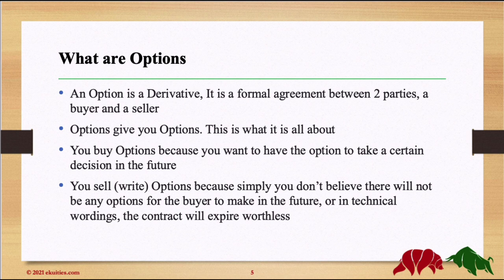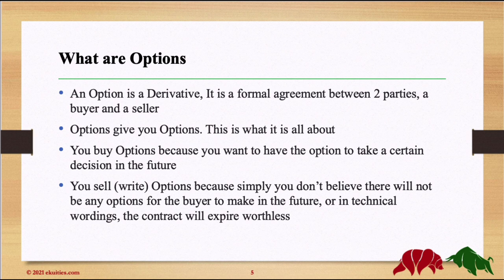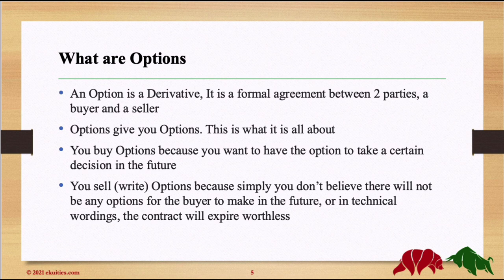What are Options? An option is a derivative. It's a formal agreement between two parties — a buyer and a seller. Options contracts are standardized agreements because they are traded on exchanges, so all the contract terms are predefined. There is also theoretically no default risk on the options contract being fulfilled, because this is guaranteed by Options Clearing Houses. They guarantee the execution or the fulfillment of the obligation on the options contract.